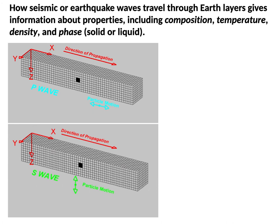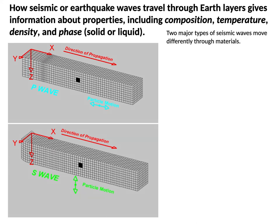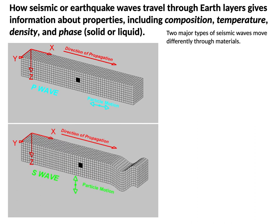The last kind of important information for figuring out the properties of different earth layers is how seismic or earthquake waves travel. This gives us information about composition, temperature, density, and phase — meaning whether it's solid or liquid. There are two major types of seismic waves useful for this: P waves and S waves. There's a short animation here — take a look and see if you can figure out some differences between how these are moving. It's not something you need to memorize, just get the idea that they're moving differently.